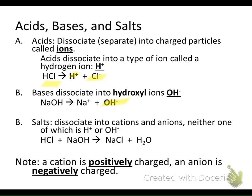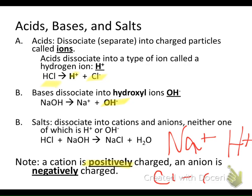So sodium chloride is a salt. Another thing to keep in mind: cations are positively charged ions. For example, Na+ is a cation, and so is H+. Whereas an anion is a negatively charged ion — something like Cl- or the hydroxyl ion OH-. Those are negatively charged, so those are considered anions.